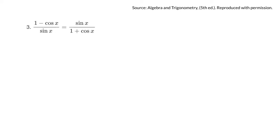This video looks at some trig identity proofs. I'll give you a start with some ideas that you can try — I could take them to the finish, but I think I'll just give you an idea of something to try. For this first one, you've got to start with one side or the other. I'm going to start on this side because it has a denominator with two terms, and I see the other side only has one term, so I'm wondering how to get one term.